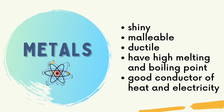Metals are shiny and dense. They are also malleable and ductile, which means that they can be rolled, flattened, and pounded into thin sheets without breaking. They also have high melting and boiling points, and one of the most significant properties of metals is that they are good conductors of heat and electricity.